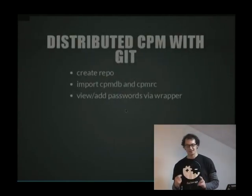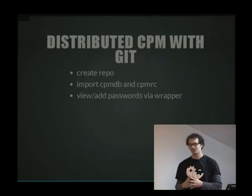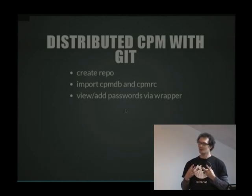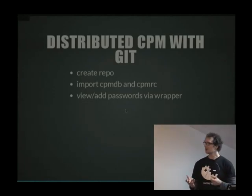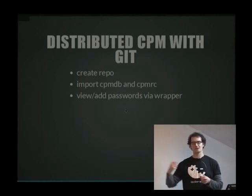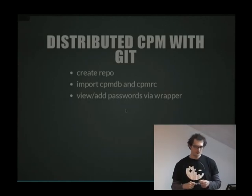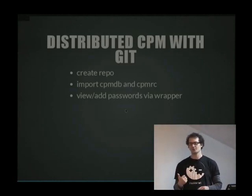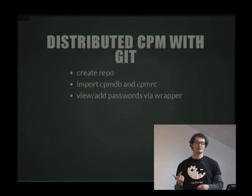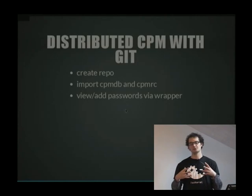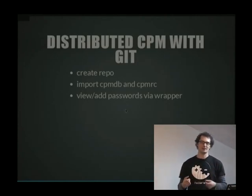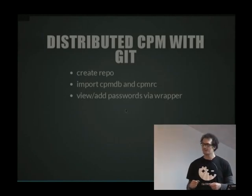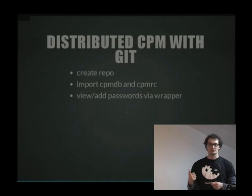A better approach is distributed CPM with Git. Create a Git repo, import CPMDB and optionally a config file, and use a wrapper script to pull from the repo, open CPM, and push changes back if there are differences. You gain redundancy — you'll never lose the database if syncing across many computers — and if sharing with a team, there's no single point of failure. Everybody has a copy of the database, and you don't have to deal with Unix permissions.